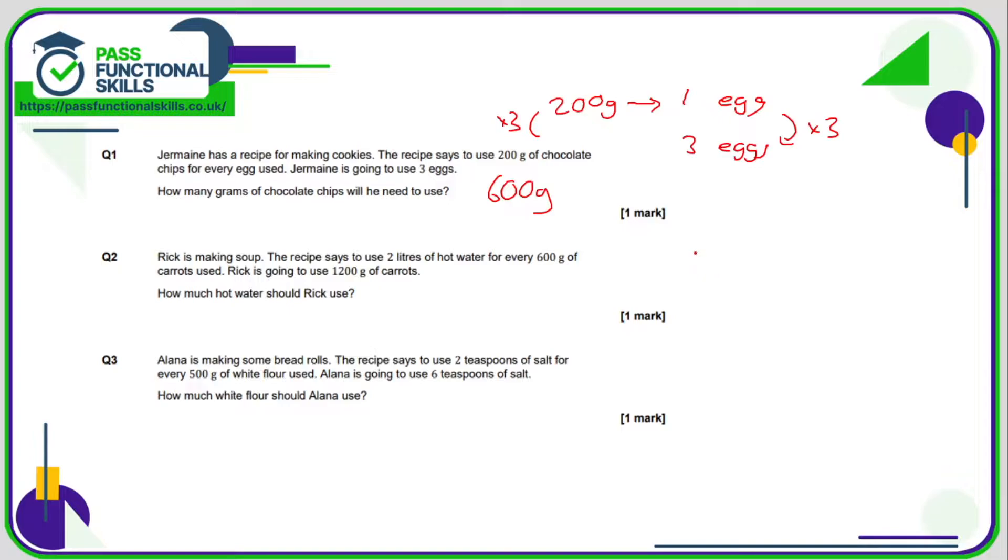For Rick's soup it's two liters of water for 600 grams of carrots. If he's got 1200 grams of carrots, that is double the number of carrots, so he's going to need double the water, so that's four liters.